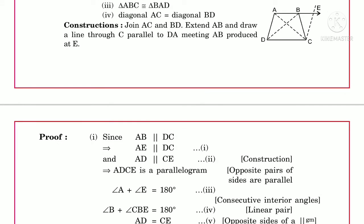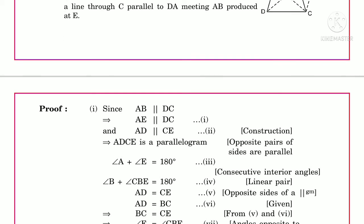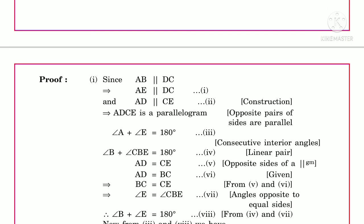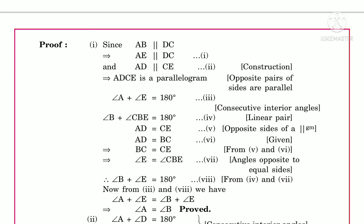Since AB is parallel to DC, AE is also parallel to DC. And AD is parallel to CE by construction. So opposite pairs of sides are parallel, meaning ADCE is a parallelogram. For consecutive interior angles (linear pair), the sum is 180 degrees, so angle A plus angle E equals 180 degrees. Also, AD equals CE since ADCE is a parallelogram, and AD equals BC (given), so BC equals CE, meaning angle E equals angle CBE.